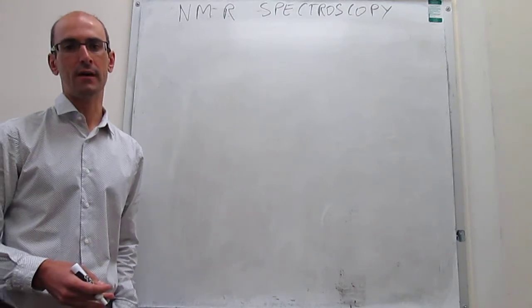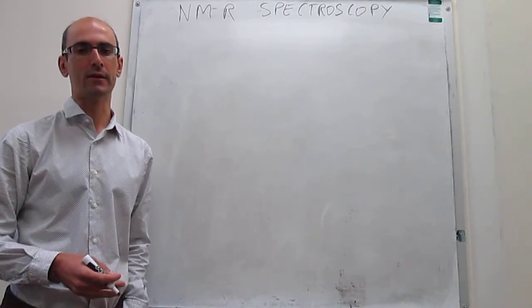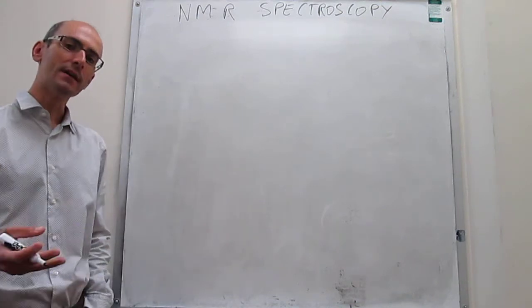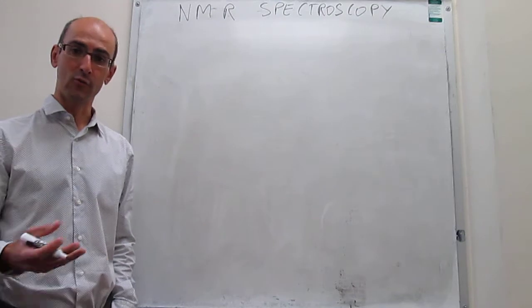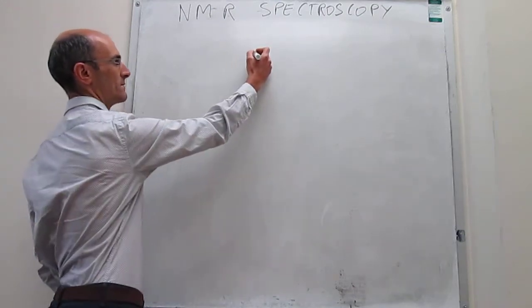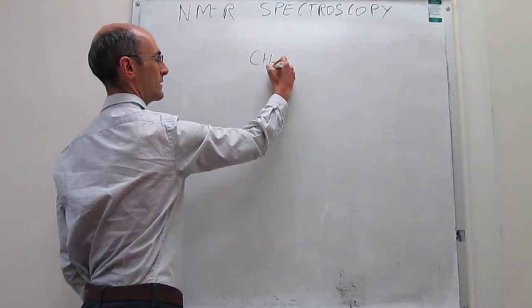We can take a solution of neat methanol, so methanol just by itself, and again try to analyze what the NMR spectrum for those protons would look like. This is methanol CH3OH.